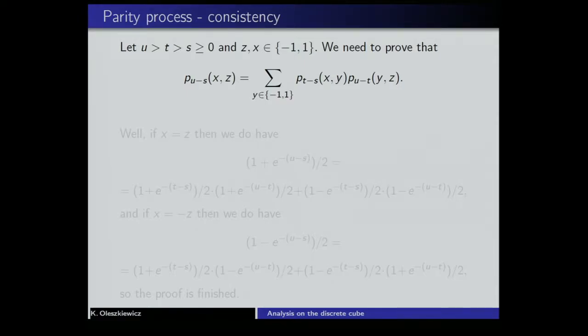To verify the Chapman-Kolmogorov equations, take three times u ≥ t ≥ s. We compute the composition of the transition matrices and verify consistency.